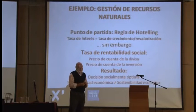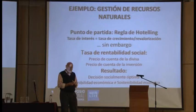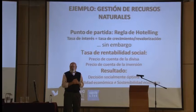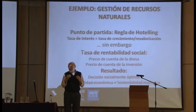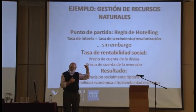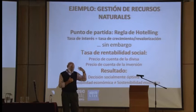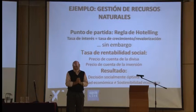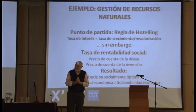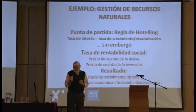Esto se traduce en dos precios con los cuales el Estado resuelve el problema de asignar recursos: el precio de cuenta de la divisa y el precio de cuenta de la inversión. En el momento en que usted los añade, la tasa contable de interés con la que resuelve el problema se dispara por encima de la tasa social de descuento del consumo. Cuanto mayor sea el desequilibrio, mayor será esa diferencia. Por lo tanto, lo fundamental es tener claro que el Estado, como representante de la sociedad, va a llevar a cabo una explotación de ese recurso demasiado intensiva respecto a lo que existiría si el país estuviera en equilibrio, y vamos a ver una sobreexplotación de los recursos naturales: de la pesca, de los bosques, de los recursos minerales.